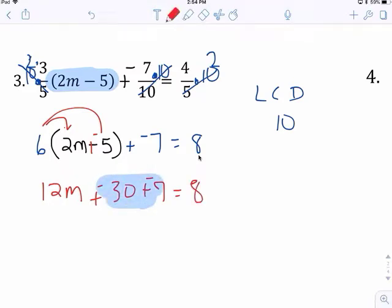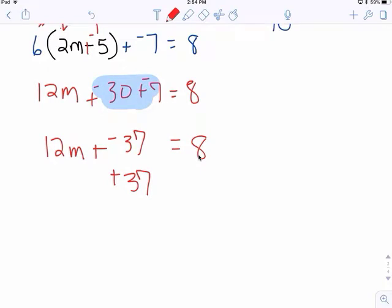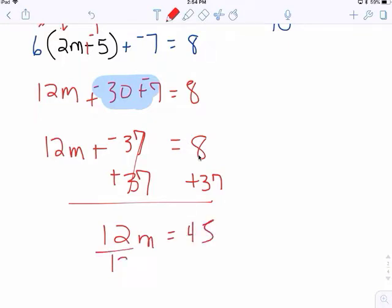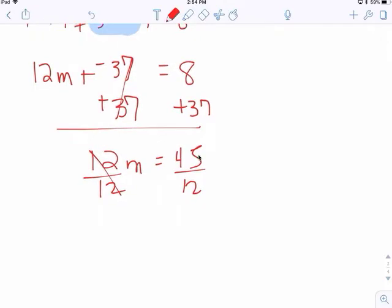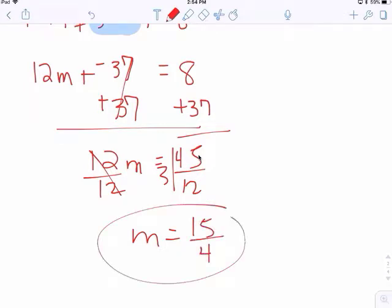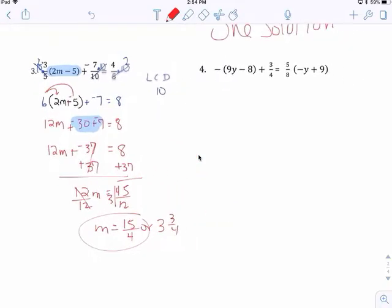You combine these two. Get negative 37. 12m. Then you add 37, right? Make 0. 12m equals to 45. Divide by 12. Can reduce by 3. 1, 5, over 4. Or, 3 and 3 fourths. Or go into 15 times, 3 times, with the remainder of 3.